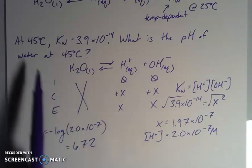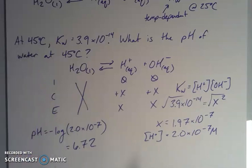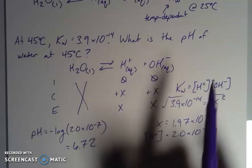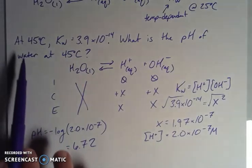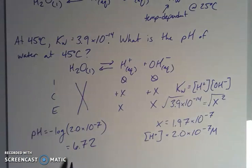So we can see then that the temperature increased from the normal thermodynamic conditions where we know that water is pH of 7 at 25 degrees Celsius, but at 45 degrees Celsius, it's got a pH of 6.72. So it got warmer. Water got slightly more acidic.